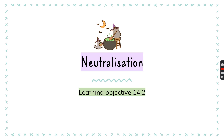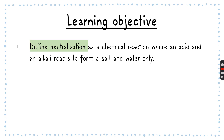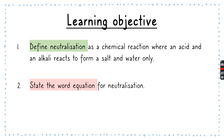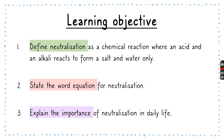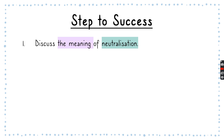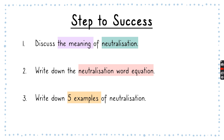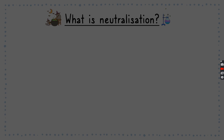Now let's look into neutralization, which is learning objective 14.2. These are our learning objectives: define neutralization as a chemical reaction where an acid and an alkali react to form a salt and water only; state the word equation for neutralization; and explain the importance of neutralization in daily life. Our steps to success are to discuss the meaning of neutralization, write down the word equation, and write five examples of neutralization.